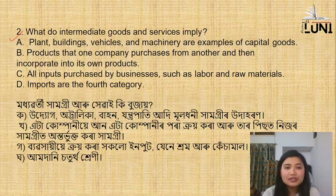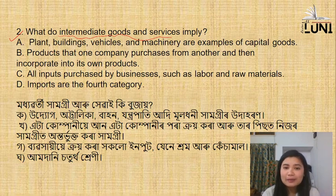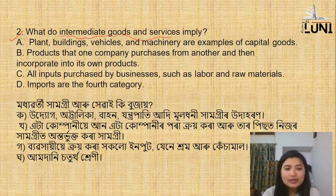What do intermediate goods and services imply? The options include: plant, buildings, vehicles and machinery as examples of capital goods; products that one company purchases from another and then incorporates into its own products; and all inputs purchased by the business such as labor and raw materials imported in the fourth category. I'm not sure about this - why do we say intermediate?